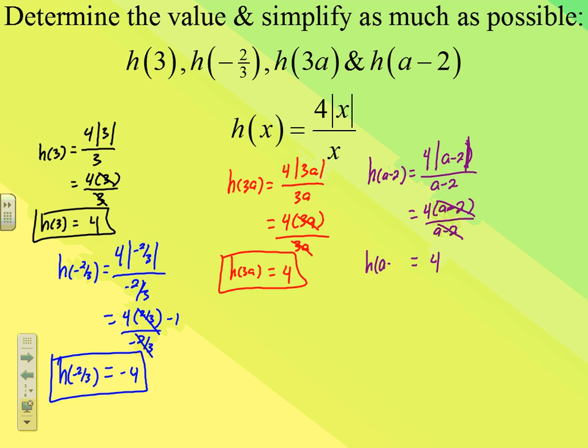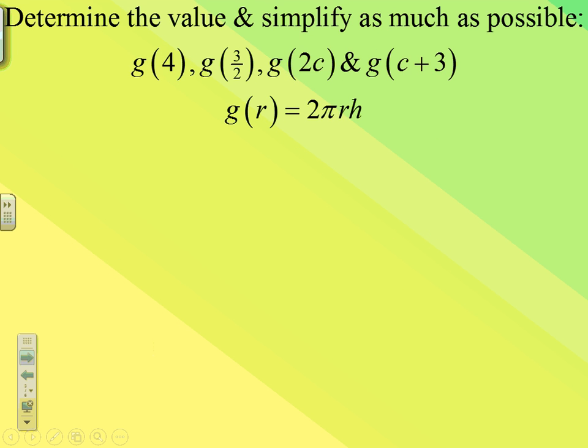Even though we had an absolute value with a rational expression, because the absolute value expression in the numerator simply matches what's in the denominator, they simplify nicely. If the numerator had been something like x+1, they wouldn't have worked out quite so cleanly.